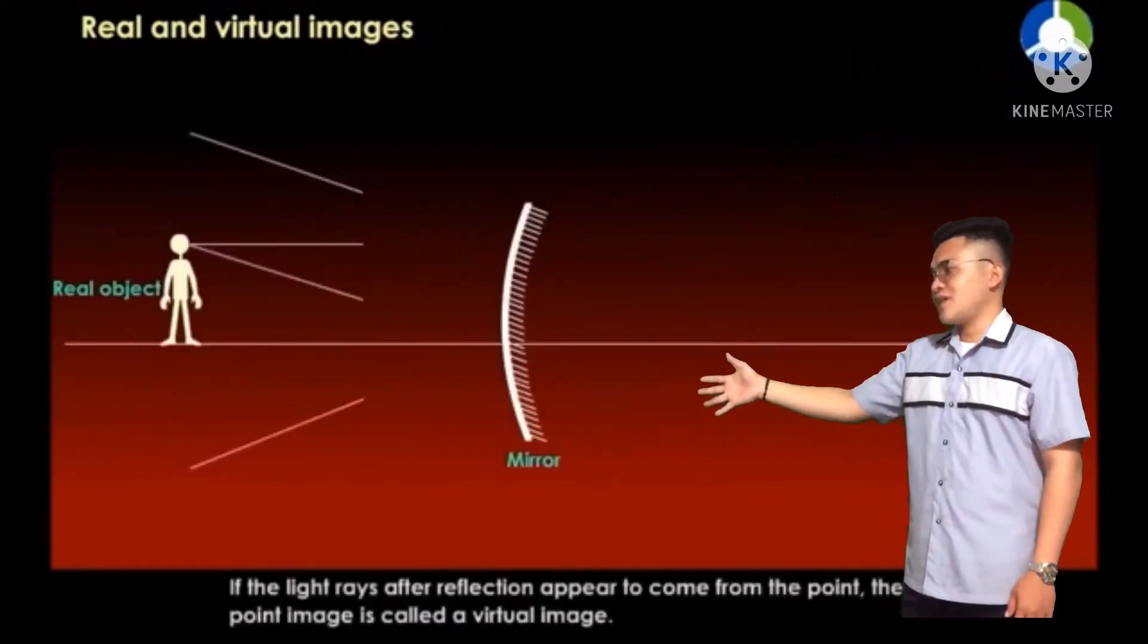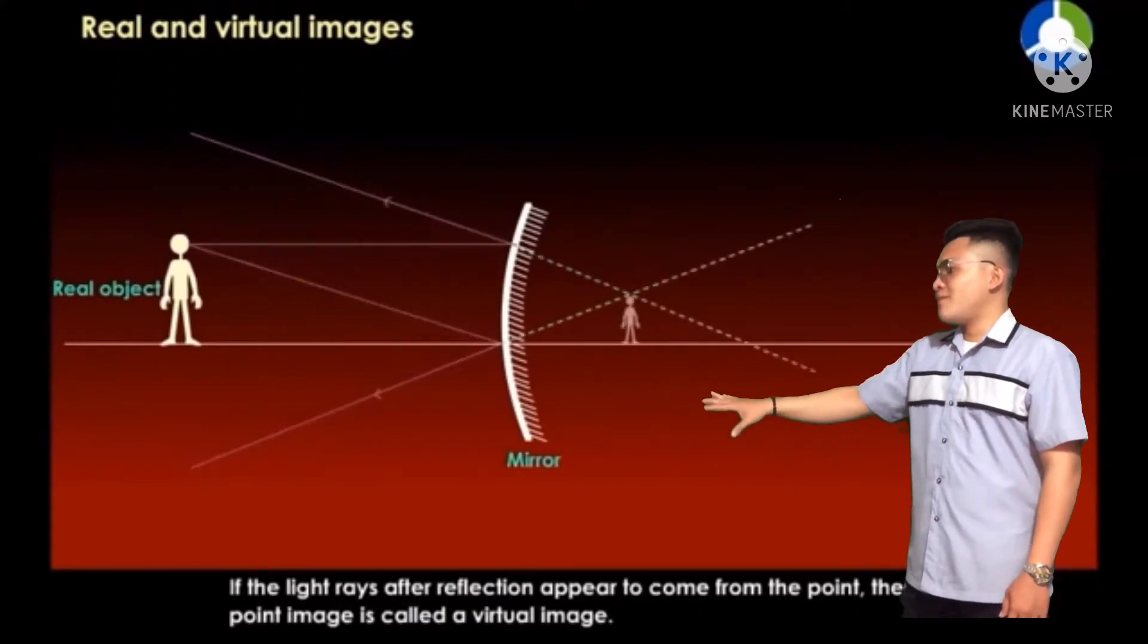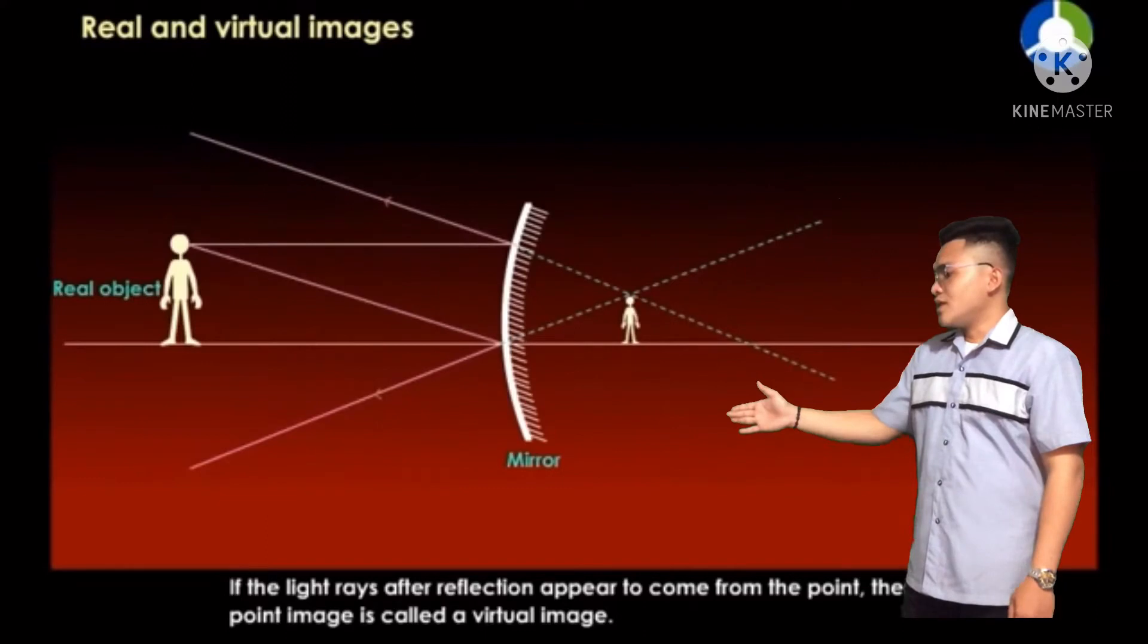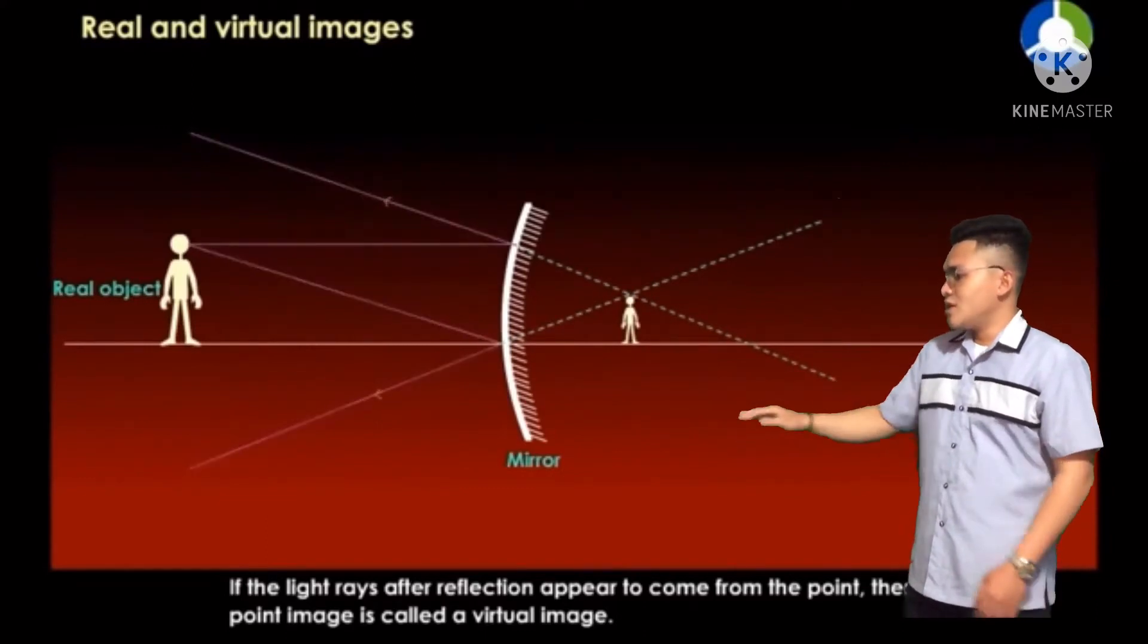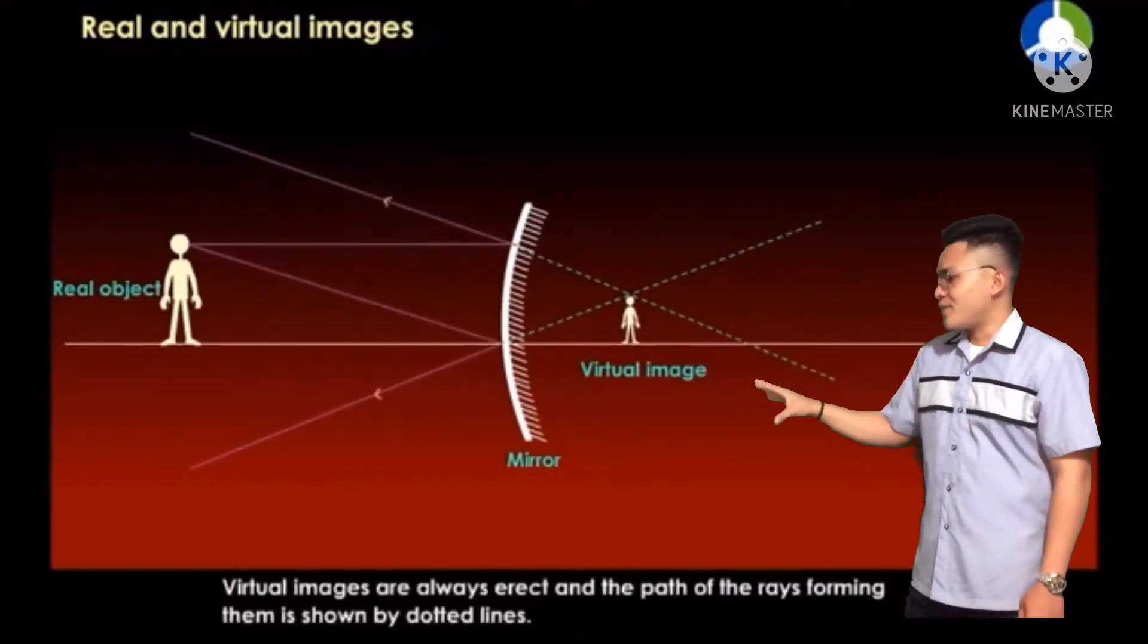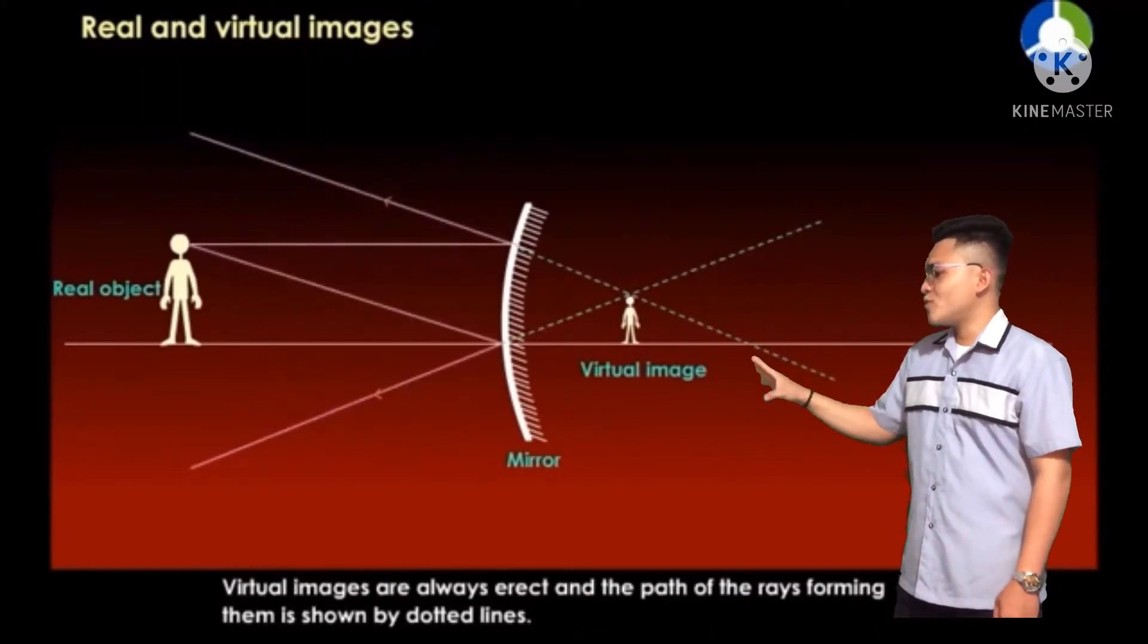If the light rays after reflection appear to come from a point, the point of image is called a virtual image. Virtual images are always erect and the path of the rays forms them.